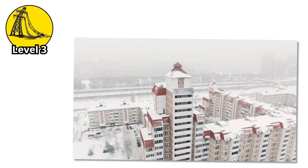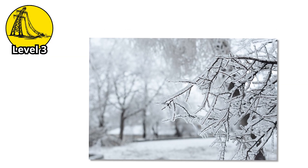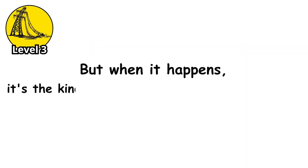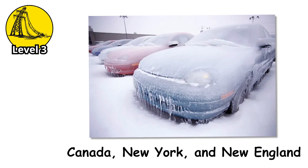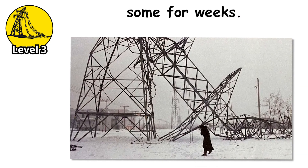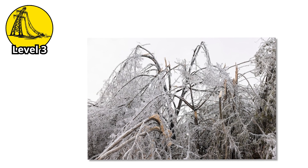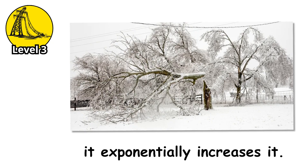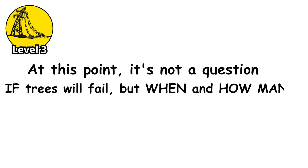Level 3. Welcome to the threshold where ice storms enter the history books. Two inches of ice accumulation is rare — so rare that most people will never experience it in their lifetime. But when it happens, it's the kind of event that defines a generation. This is the level of the 1998 ice storm that devastated parts of Canada, New York, and New England, leaving millions without power, some for weeks. Two inches of ice on a tree branch doesn't just double the one-inch load — it exponentially increases it. We're talking about tens of thousands of pounds distributed across a tree's structure. It's not a question of if trees will fail, but when and how many.